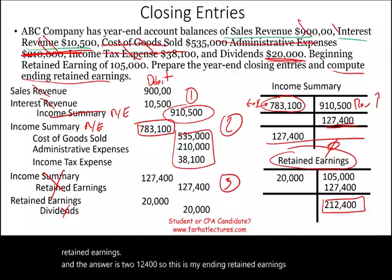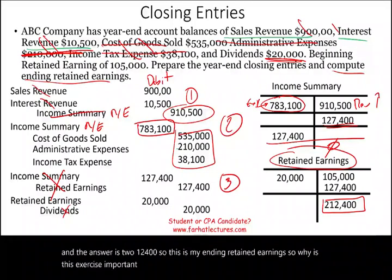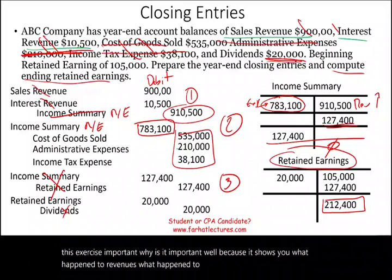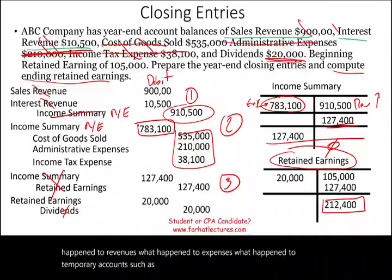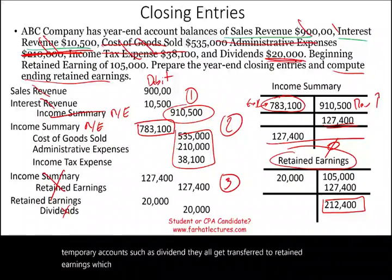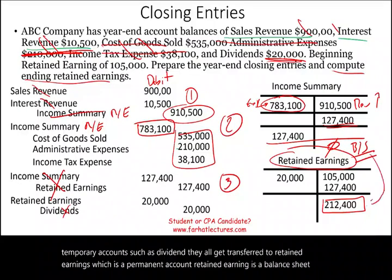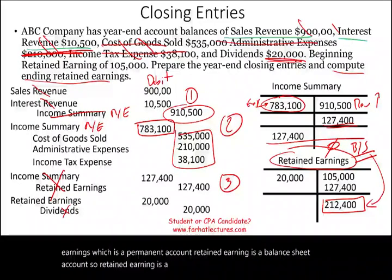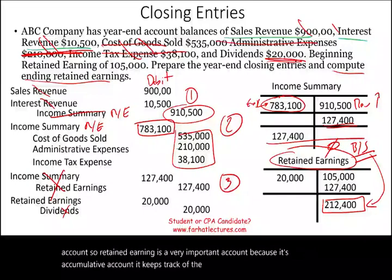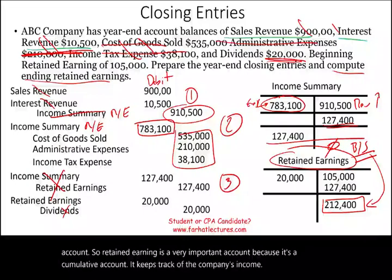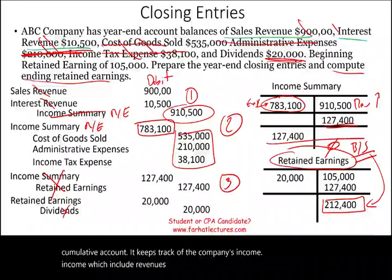Why is this exercise important? It shows you what happened to revenues, expenses, and temporary accounts such as dividends — they all get transferred to retained earnings, which is a permanent balance sheet account. Retained earnings is a very important cumulative account that keeps track of the company's income, which includes revenues, expenses, and dividends — and losses if applicable — over the years.